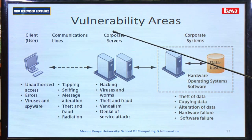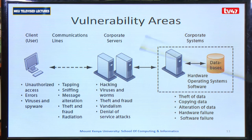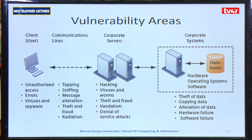Level three is the corporate server. At this level we experience hacking, viruses and worms which may be planted within the corporate servers, and also theft and fraud, vandalism, and denial of service. The last level is what we call corporate systems, whereby we have the hardware, operating system, and databases where information is stored. When a vulnerability occurs here, the following things happen: theft of data, copying of data, alteration of data, hardware failure, and software failure.